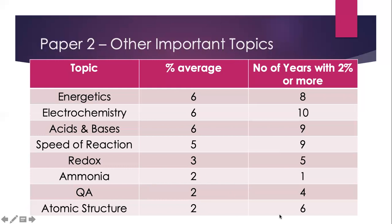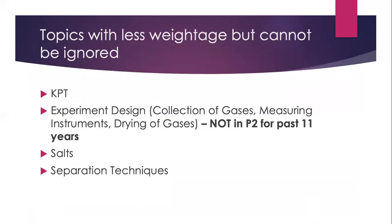Atomic structure will have some questions and has a significantly high probability of coming up. Other topics that cannot be ignored but carry much less weightage include KPT and experiment design. It is worth highlighting that experiment design has not appeared in Paper 2 at all over the past 11 years — none whatsoever. But that does not mean it will not appear this year. Based on the trend it is less important, but you should still study it. The setter typically would rather set other topics that carry more marks and require students to explain more.